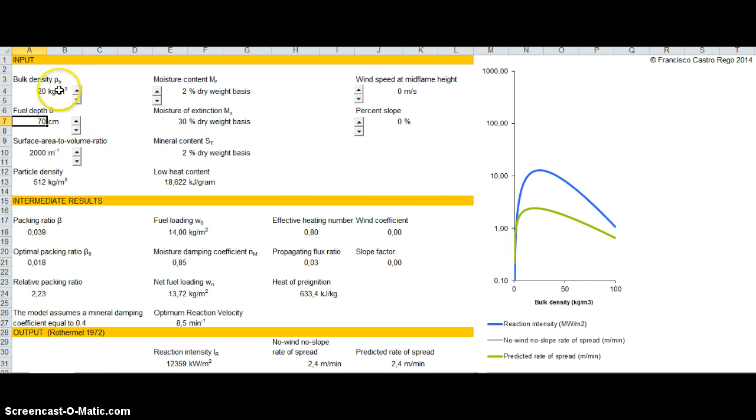So here you can change bulk density. You start with 20 kilograms per cubic meter. But if you increase it, you can see what is the change of this increase in bulk density on reaction intensity and also in rate of spread. So rate of spread is now 21 meters per minute. If you increase your bulk density, you'll be decreasing your rate of spread because you are already in this decreasing part of the graph.